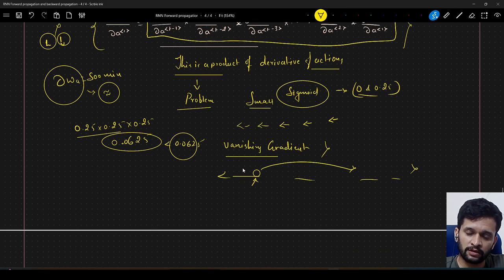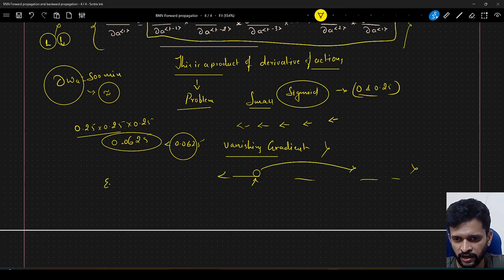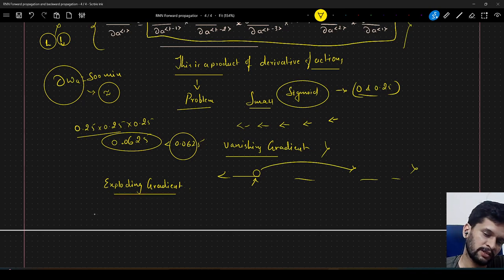Now the same product can also pose a problem of exploding gradients, right. So what is exploding gradient problem? I have explained this in my earlier videos with respect to neural networks. What happens?